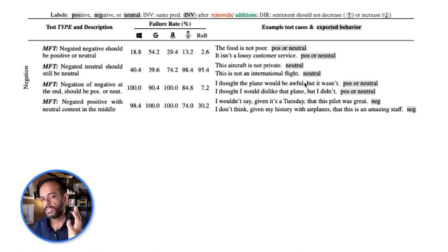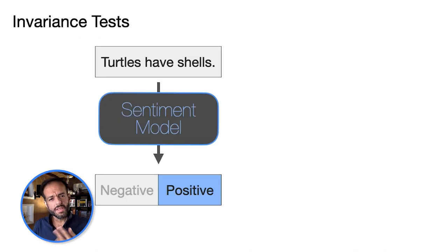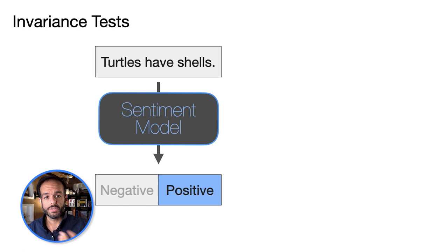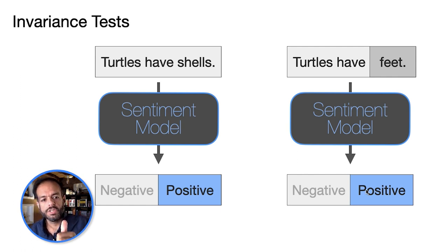This is an interesting way to evaluate and quality-assure models as part of a CI/CD setup. The second type of test is an invariance test. If we have a neutral sentence like 'Turtles have shells' and we change it in a way that does not change the sentiment — say 'Turtles have feet' — the prediction of the model should not change. The class should not flip.